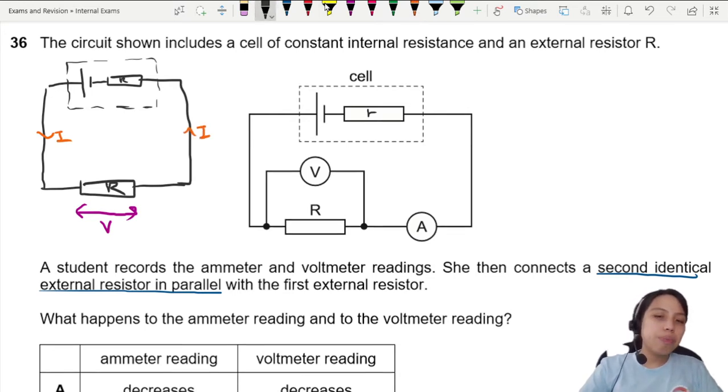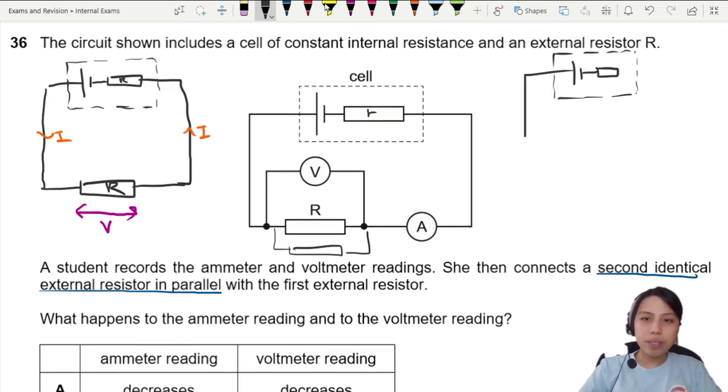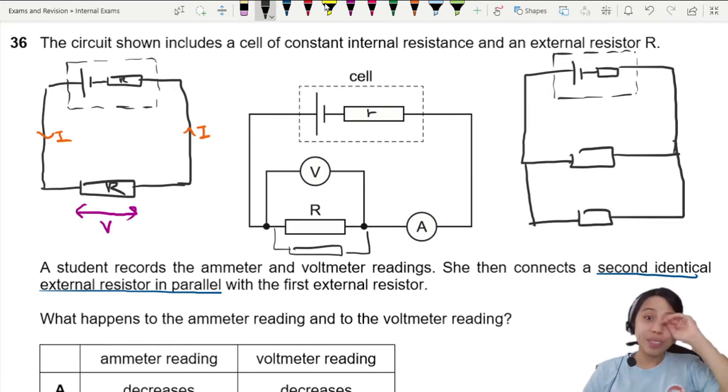So when you add another resistor in parallel, you're just adding it like that. If it feels a bit confusing, we'll redraw again. Battery with internal resistance, we have our two resistors here. You add parallel, so got one more here. Two already.